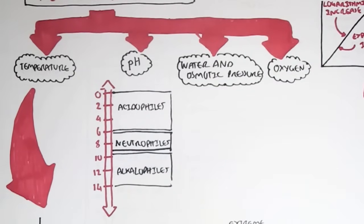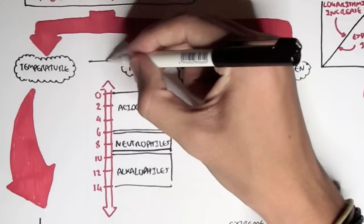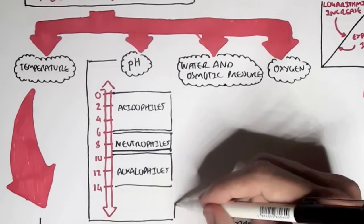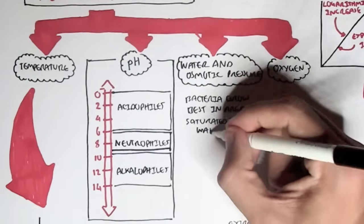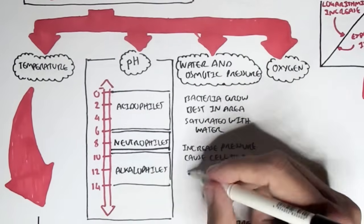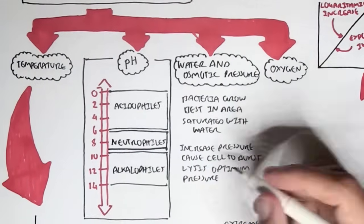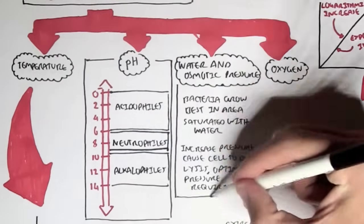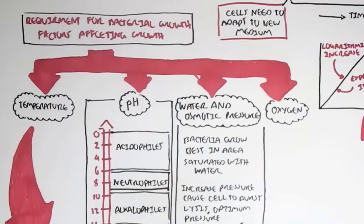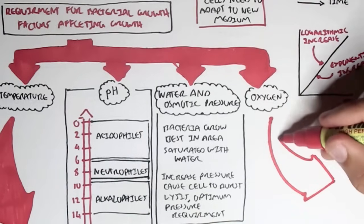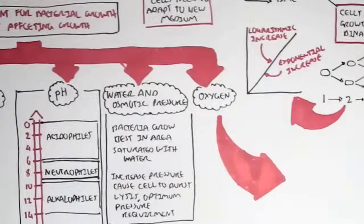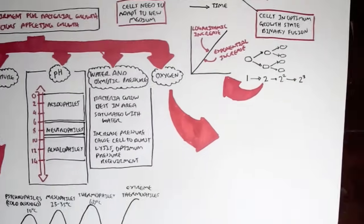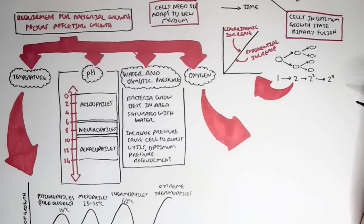Another factor which affects the growth of bacteria is water and osmotic pressure. Bacteria grow best in areas saturated with water. The increase in pressure in a bacteria or cell causes the cell to burst as well, and so an optimum pressure is required.